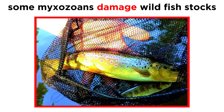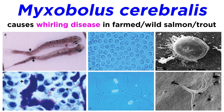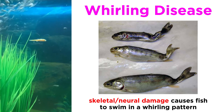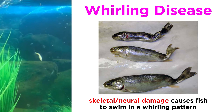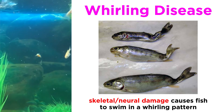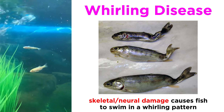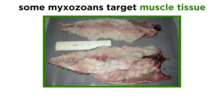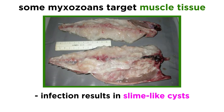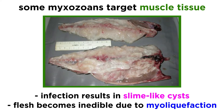Though most mixozoan parasites do not harm their intermediate hosts, some are increasingly damaging wild fish stocks. They are perhaps most infamous due to their economic impact on commercially valuable fishes. Myxobolus cerebralis, for example, causes whirling disease in both farmed and wild salmon and trout. Whirling disease causes skeletal deformities and neurological damage that forces infected fish to whirl in an awkward corkscrew-like pattern, making feeding difficult or impossible. Other mixozoans target the muscle tissue, creating slime-like cysts. Living fish do not show symptoms of infection, but after death their flesh becomes extremely soft, slimy, and inedible due to myoliquefaction.